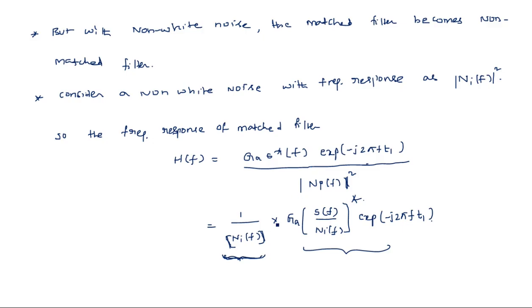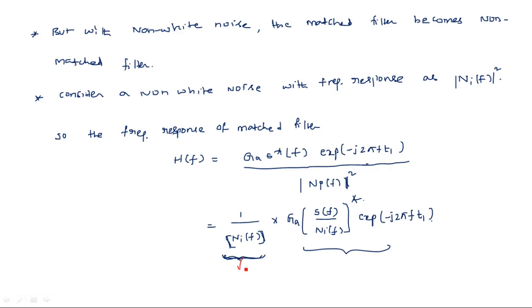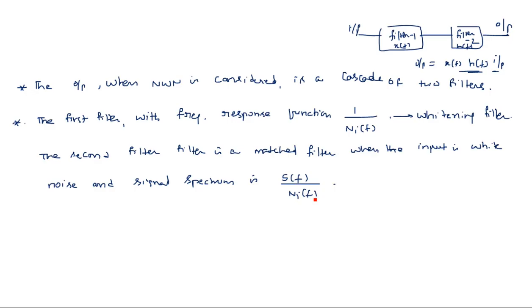So the first filter is a whitening filter and the second filter is a matched filter with input signal as S of F divided by ni of F. This is what the matched filter with non-white noise means. When it is white noise there is no problem and we can directly use the same expression, because white noise has uniform spectral density. But when we consider non-white noise, we must determine the amount of noise and the original signal spectrum, so that it becomes a perfect matched filter. Otherwise it is a non-matched filter.